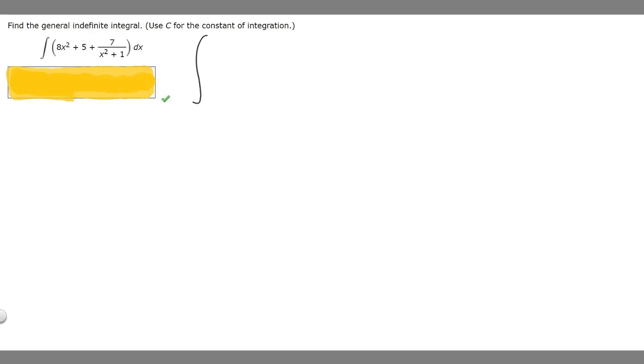The first thing I'm going to do is rewrite our integral. So we have 8x squared plus 5, and then this part right here, 7 over x squared plus 1, I'm going to take the 7 out to make it 7 times 1 over x squared plus 1. You'll see why I do this in a second. So plus 7 times 1 over x squared plus 1 dx.